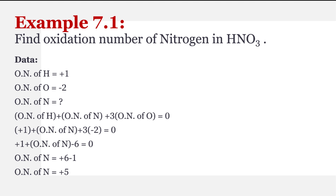Ab sirf humne values put karna hai. Hydrogen ki oxidation number ki value put ki: plus one. Oxidation number of oxygen ki value put ki: minus two. Simply usko solve karna hai — simple calculation hai, koi khas mushkil nahi. Aur end mein end result mil gaya: oxidation number of nitrogen is equal to plus five.